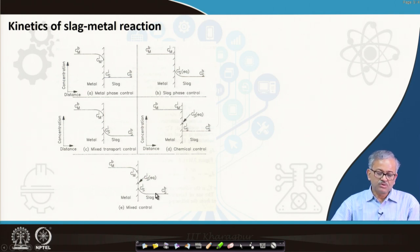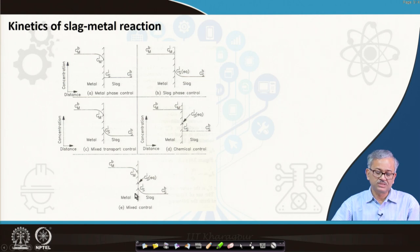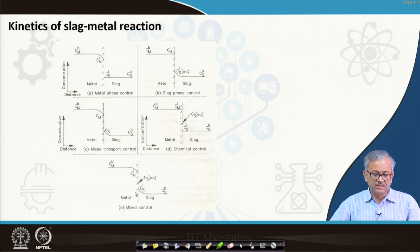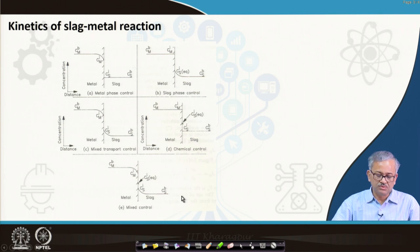Mixed control occurs when transport on the metal side, transport on the slag side, and the chemical reaction at the interface all have comparable resistances. These resistances are in series and constitute the total resistance, which is called the mixed transport system.